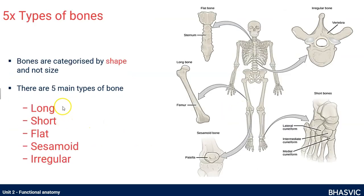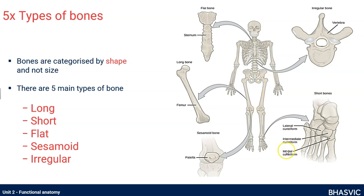The five types of bones are long bones, short bones, flat bones, sesamoid bones and irregular bones. One important thing to note is that these are categorized by their shape and not by their size. For example, the femur is a long bone — it happens to be large, but the point is it's longer than it is wide. The little bones of the feet and hands are also long bones, even though they're small, because their shape is longer than they are wide.